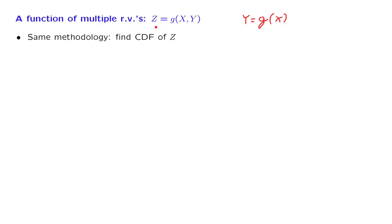The general methodology is exactly the same. We somehow calculate the CDF of the random variable z and then differentiate to find its PDF.